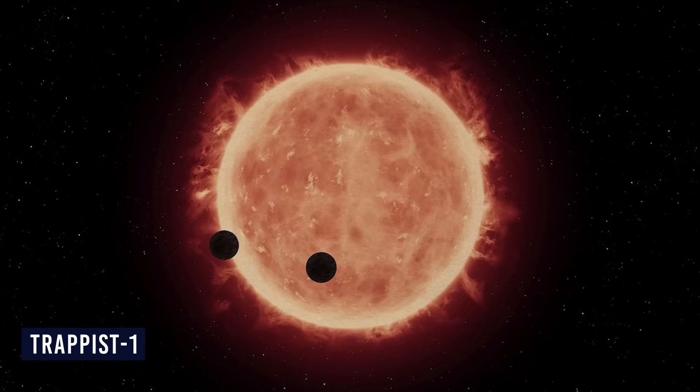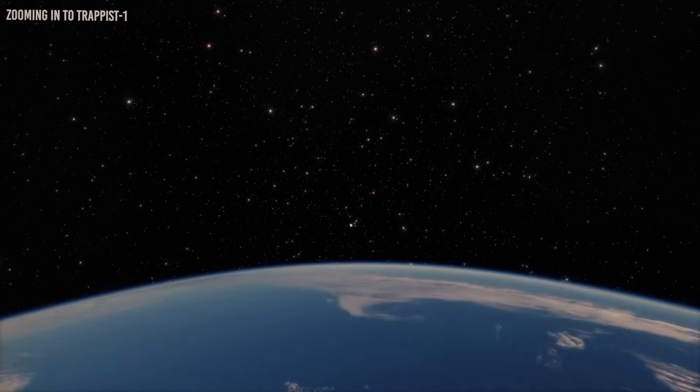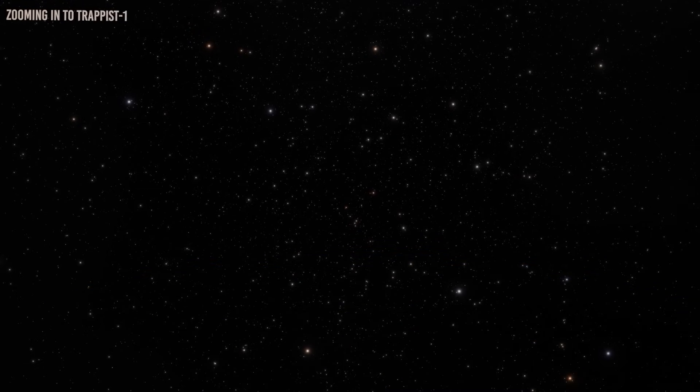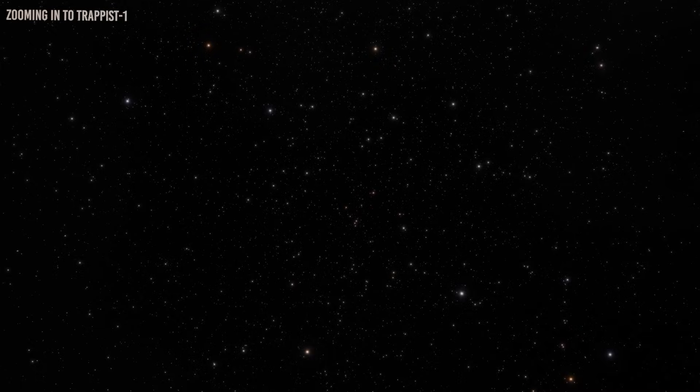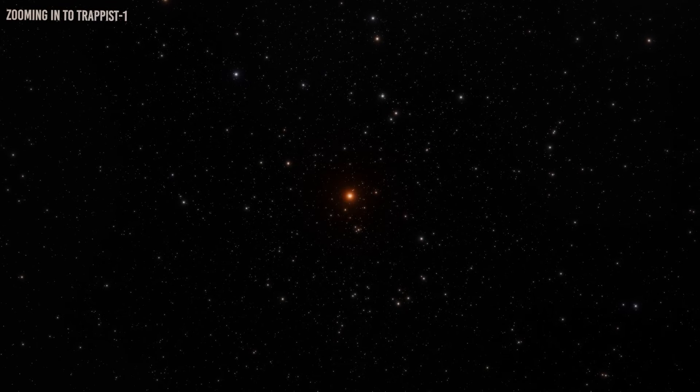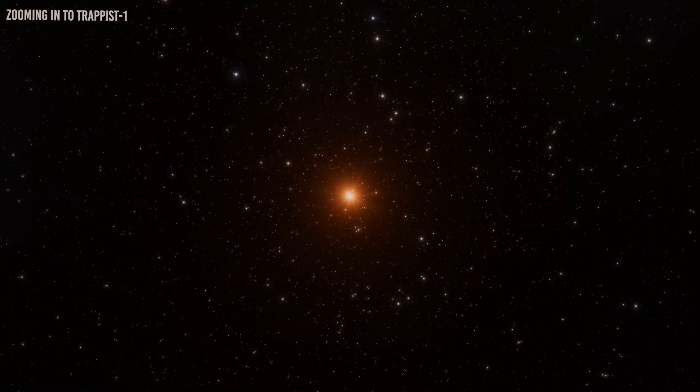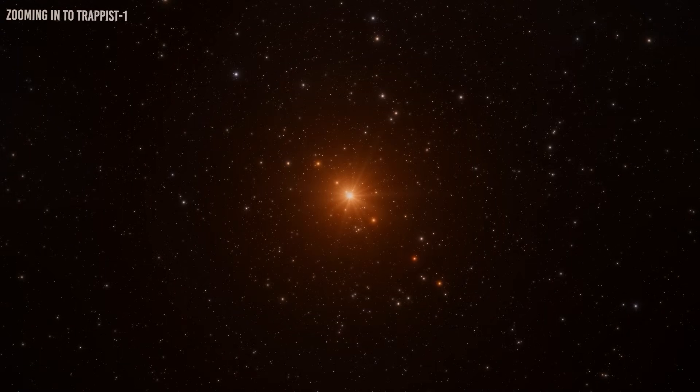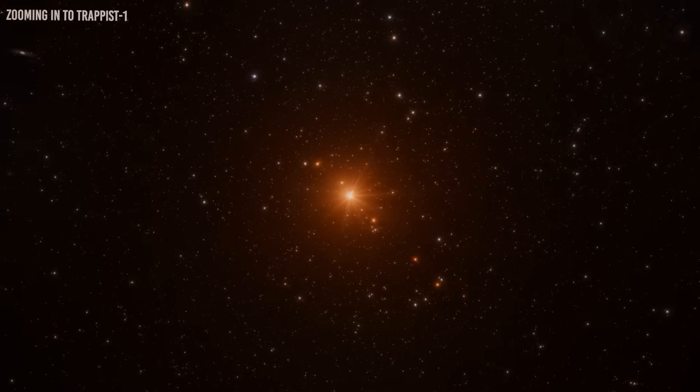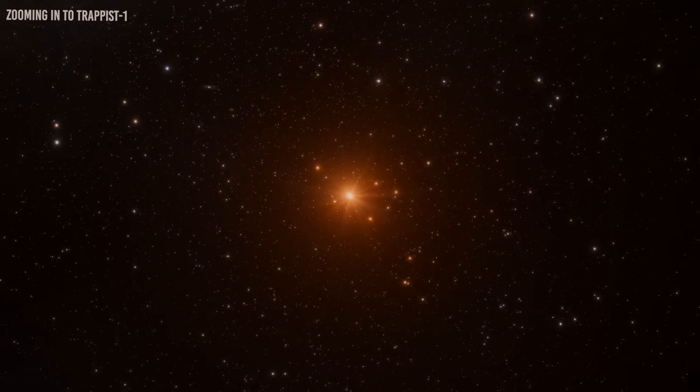The TRAPPIST-1 star might not be the heavyweight champ like our Sun, but it's got its own charm with a bunch of planets doing a cosmic dance around it. This cosmic hotspot is just 39 light years away, and it made its debut on our radar back in 2016. NASA's Spitzer Space Telescope gave it a nod of approval, and now the JWST is taking the spotlight for some close-up action. It's like the fun-sized version, only about a tenth of the Sun's weight, but with a size that's a spitting image of Jupiter. What really turns heads are the planets doing their thing around TRAPPIST-1. They're like Earth's cool cousins, all rocky and maybe packing a bit more moisture.